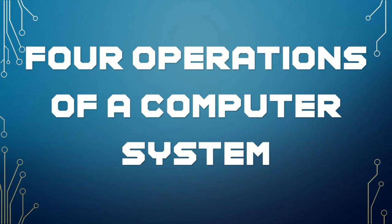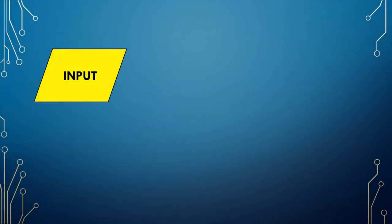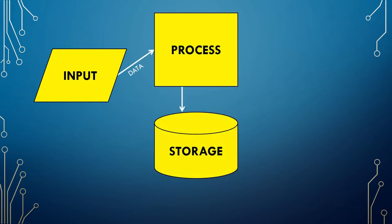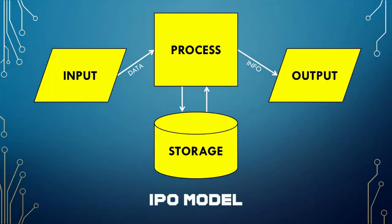Let us now tackle the four operations of a computer system: Input, Process, Storage, and Output. The illustration shown is called the IPO model, or the Input-Process-Output model. This is often used to show how data is being fed to the computer and how it turns those raw facts into information that users can fully understand. Let us discuss those operations one by one.